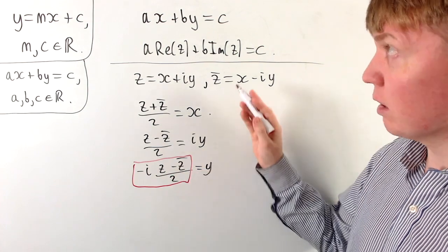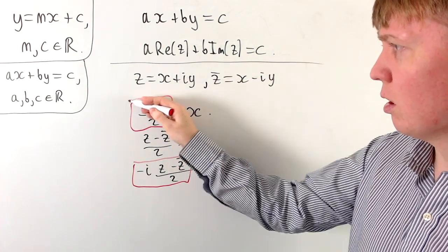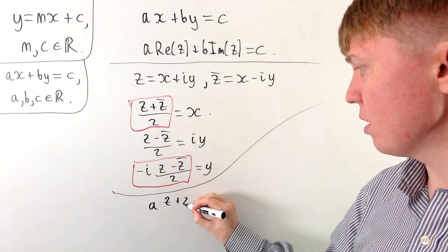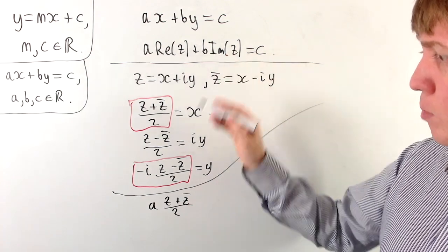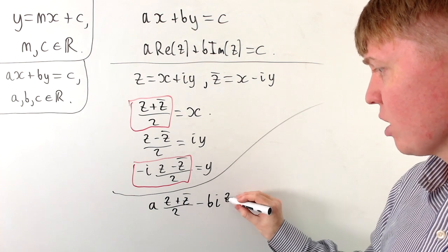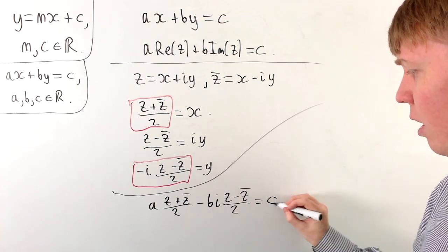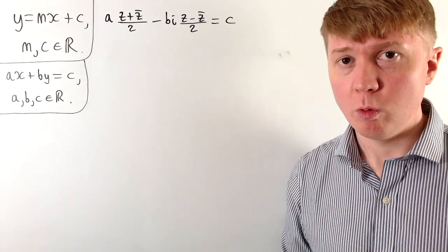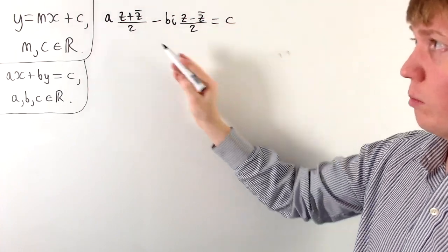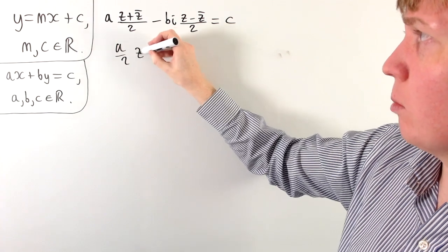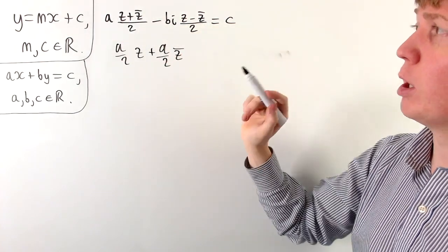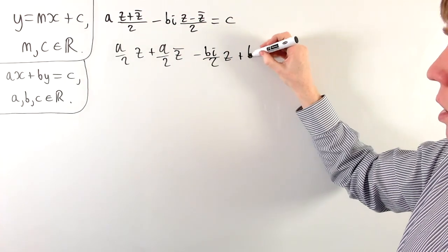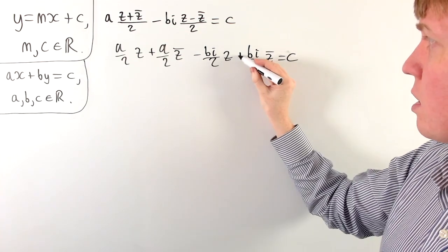We can now replace our real and imaginary parts of z with these expressions to get a different format for the equation of a straight line. We have a times (z plus z̄)/2, plus b times negative i times (z minus z̄)/2 — so minus bi times (z minus z̄) divided by two — and this equals c for our point z to lie on the line.